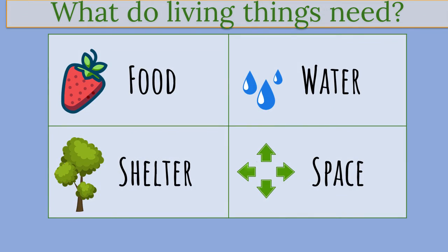Food, water, shelter, and space. Now, just because all animals need the same things out of their habitat doesn't mean that every single animal's habitat looks the same. Just as there are a huge variety of animals, there's a huge variety of habitats for them. All these places are very different in the kinds of things they offer to animals.